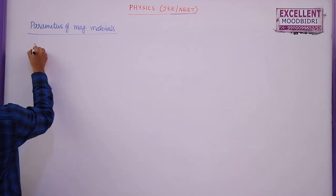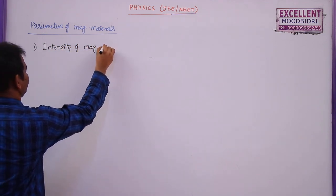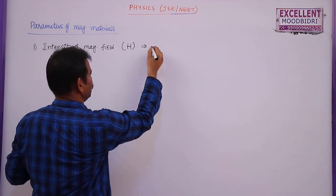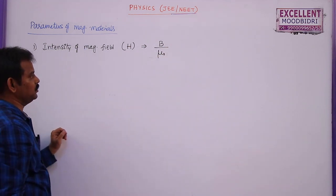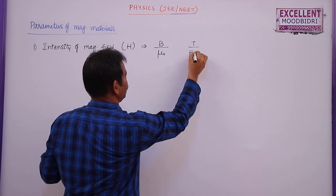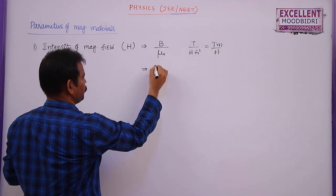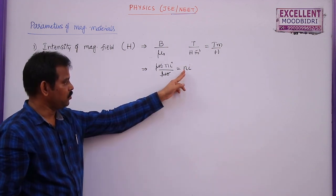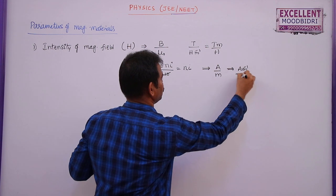The first parameter is intensity of magnetic field, denoted by the letter H, also called magnetic field strength. This is the ratio between magnetic field induction B to the permeability of free space μ₀. B is measured in Tesla and μ₀ in Henry per meter. Writing H from a solenoid: H = Ni (turns per unit length times current). So the SI unit is ampere per meter.